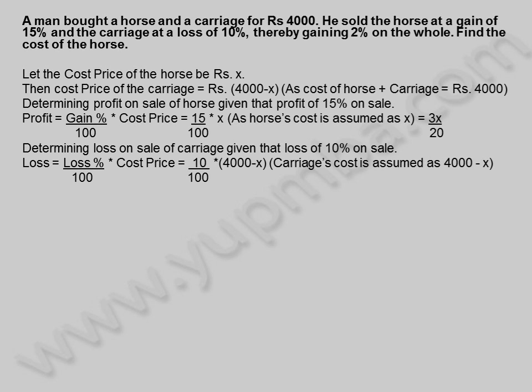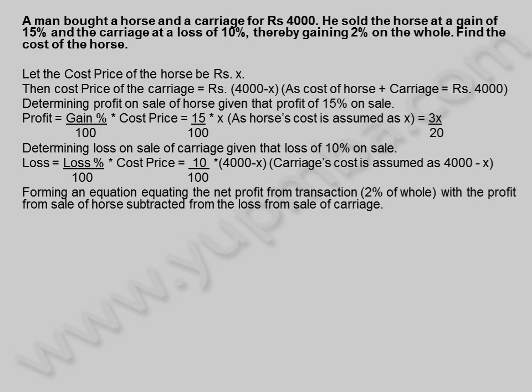Determining loss on sale of carriage given that loss of 10% on sale. Loss is equal to loss percentage by 100 into cost price, which equals 10 by 100 into (4,000 minus X), as carriage's cost is assumed as 4,000 minus X.